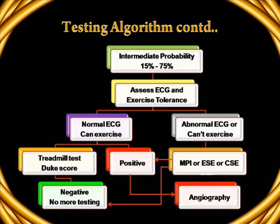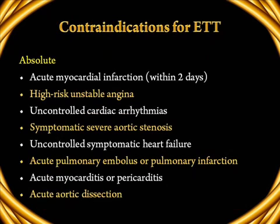If the patient comes out positive on MPI or ESE, he will be recommended for angiography. If negative, the probability of CAD is ruled out and no further testing is required. The absolute contraindications for ETT are: acute myocardial infarction within the first few days, high-risk unstable angina, uncontrolled cardiac rhythm disturbances, symptomatic severe aortic stenosis, uncontrolled symptomatic heart failure, acute pulmonary embolism or pulmonary infarction, acute myocarditis or pericarditis, and acute aortic dissection.